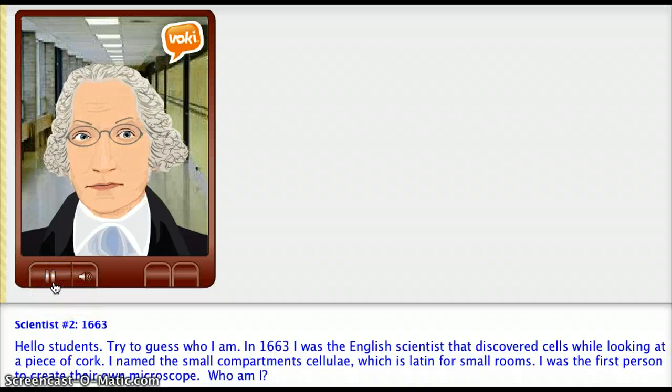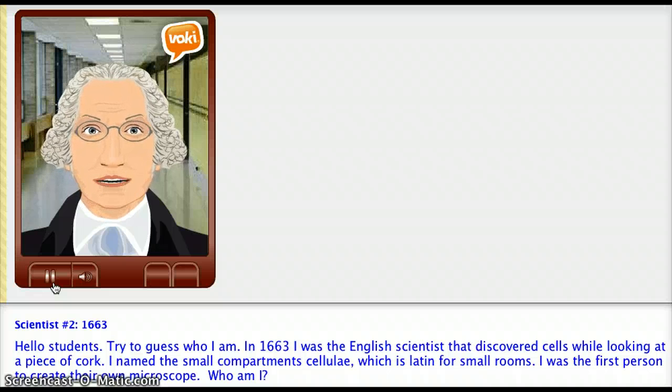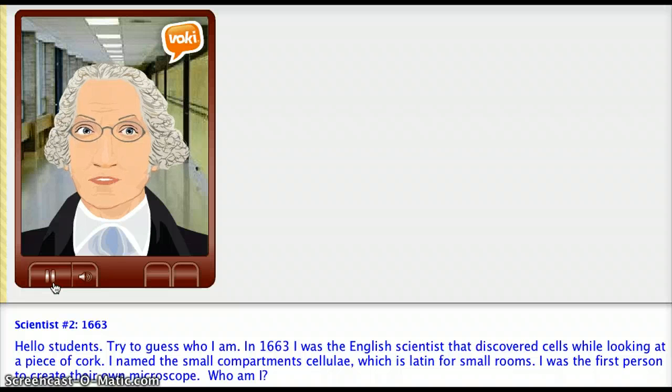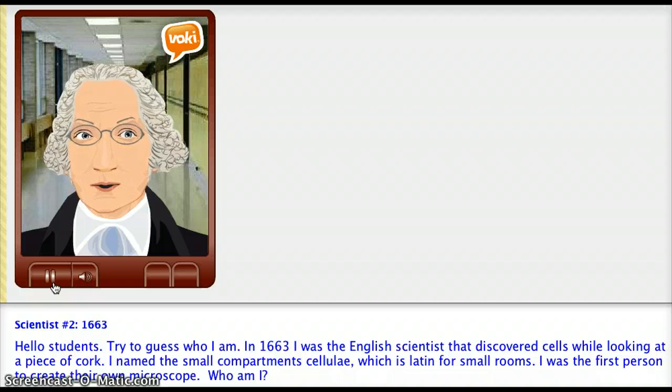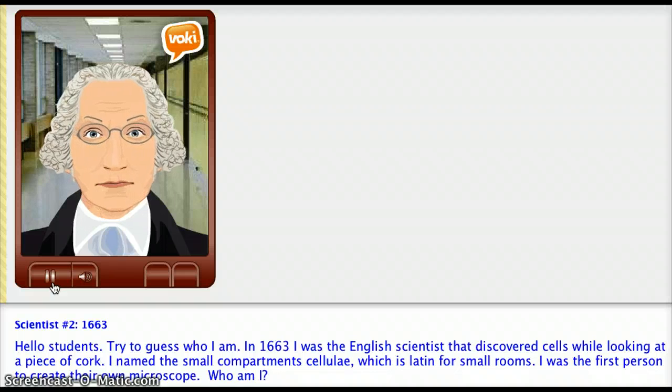Hello students. Try to guess who I am. In 1663 I was the English scientist that discovered cells while looking at a piece of cork. I named the small compartments cellulae, which is Latin for small rooms. I was the first person to create their own microscope. Who am I?